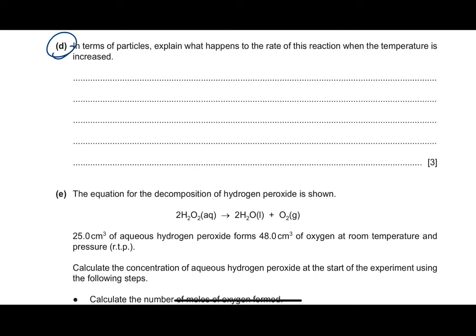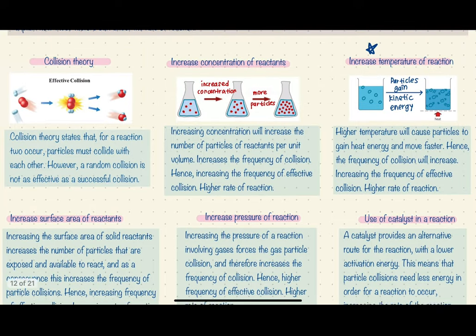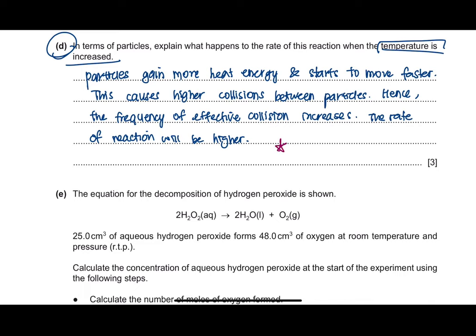This next question asks, in terms of particles, to explain what happens to the rate of reaction when temperature is increased. Temperature is another factor that affects the rate of reaction. Higher temperature causes particles to gain heat energy and move faster, hence the frequency of collision increases, which increases the frequency of effective collision, giving a higher rate of reaction. Using this explanation will get you a complete 3 marks.